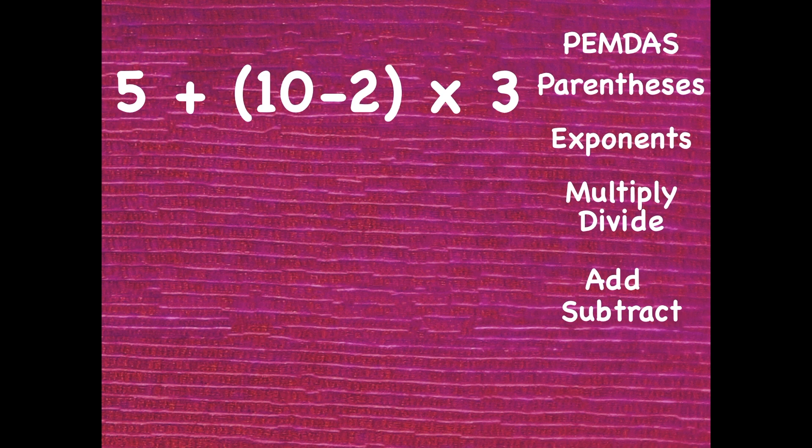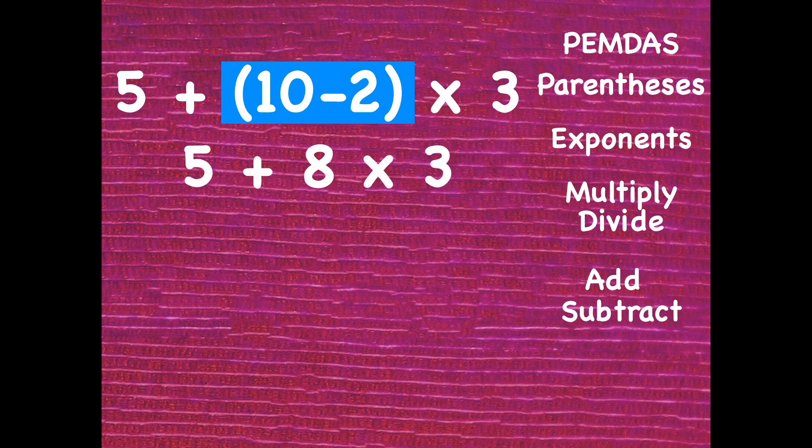If this is our problem, the first thing we're going to look for is we're just going to go left to right and look for parentheses. We found a set of parentheses here 10 minus 2 that's what we'll solve first. So that's 8. Everything else you just copy right down. Bring the rest of the problem down. So now we have 5 plus 8 times 3.